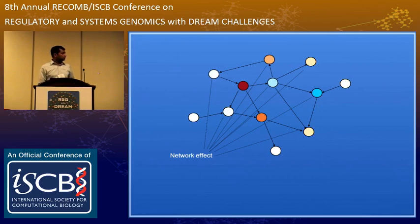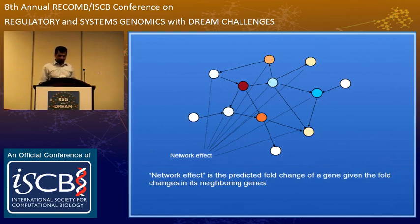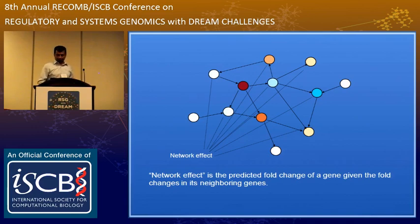Those genes I call affected by the network effect, and the main gene that is affected by the external factor — my problem is to pick that one gene out and separate it from all the other ones where the network effect is affecting the gene. I call the network effect the predicted fold change of a gene given the fold changes in its neighboring genes. Many of these terms are undefined right now but I will define them in the next slide.